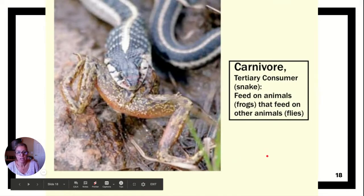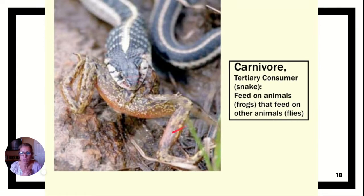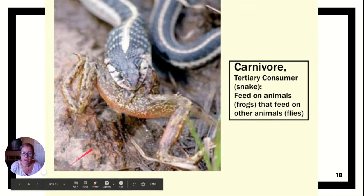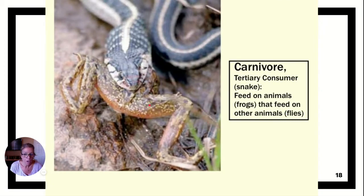Here we have a tertiary consumer — the snake. The tertiary consumer is eating the secondary consumer, which is the frog. The frog could eat a fly, and that fly could be an herbivore if it ate plant material. So: grass is the producer, the fly is the primary consumer, the frog is the secondary consumer, and the snake is the tertiary consumer. Generally you don't go much higher than that because you just can't get enough energy.